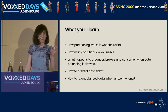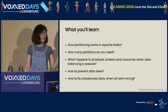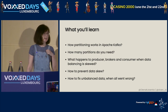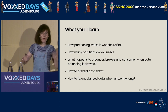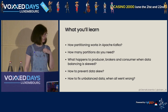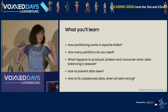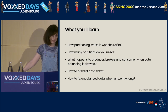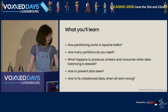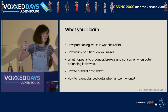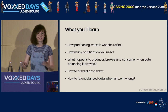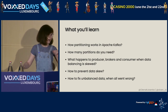By the end of this session, you will learn how exactly partitioning works in Apache Kafka, how many partitions you will need for your use case, and how you can calculate that number. And what happens to producers, brokers, and consumers when data balancing gets skewed — and who of them is suffering the most. Also, how we can prevent that skew, and in case you couldn't follow those recommendations, what exactly are your options to fix the badly balanced data across partitions.